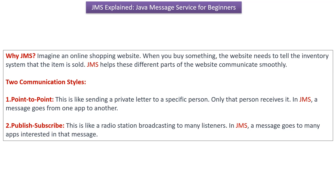There are two communication styles in JMS. The first one is point-to-point communication. This is like sending a private letter to a specific person — only that person receives the letter. In JMS, the message goes from one app to another app. The second communication style is publish-subscribe. This is like a radio station broadcasting to many listeners. In JMS, the message goes to many apps which are interested in that particular message.